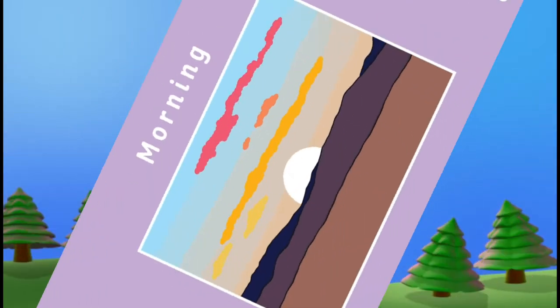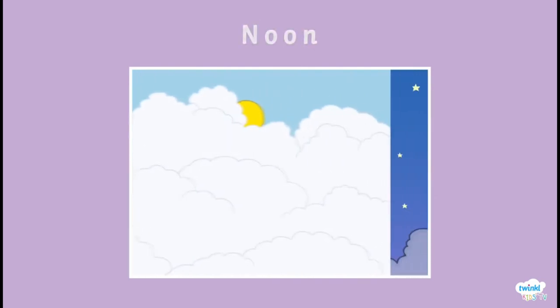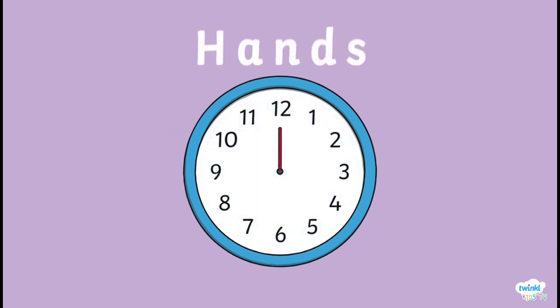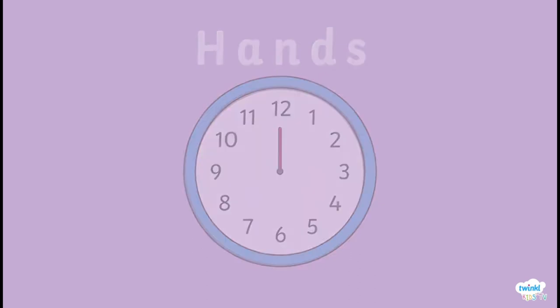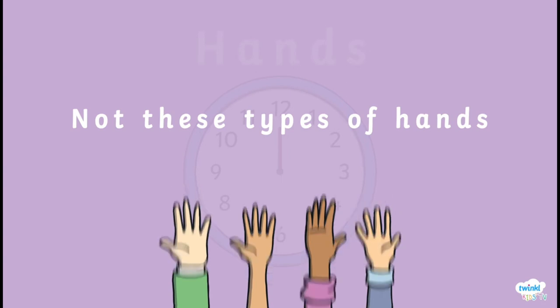We tell the time so we know when different events happen throughout the day, whether during the morning, noon, evening, or night. This is an analog clock. The blue highlighted area is called the clock face, and the red lines are called hands.